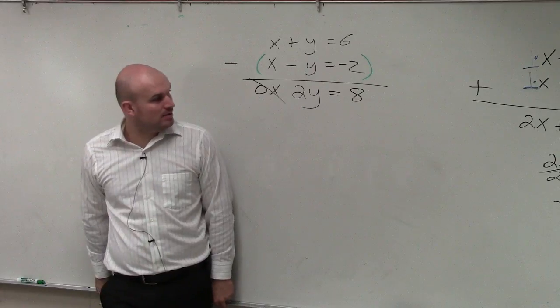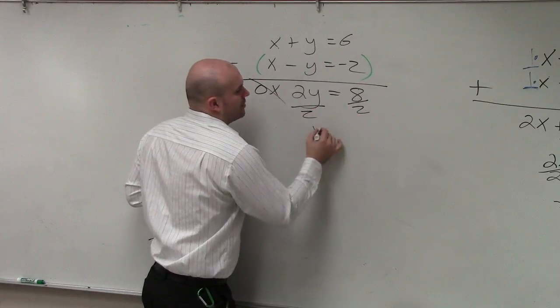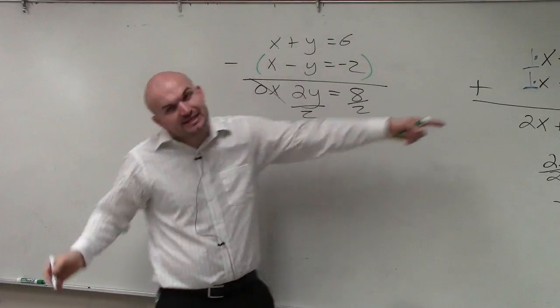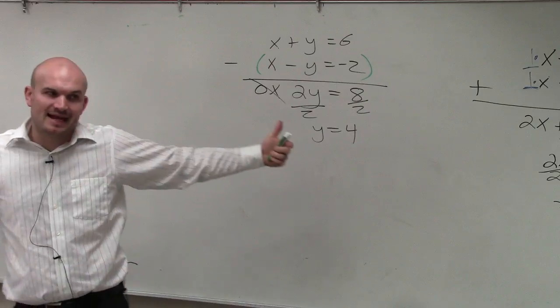So now we have 2y equals 8. Divide by 2. y equals 4, which is the exact answer we had over there. But it's just a different way of obtaining it.